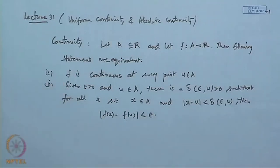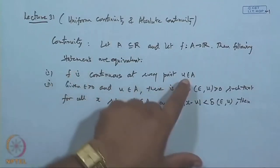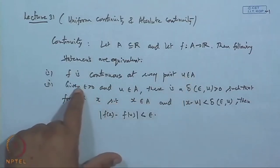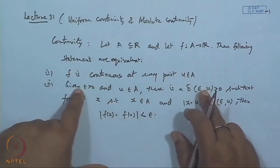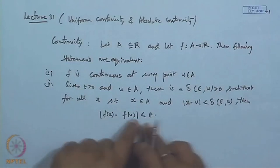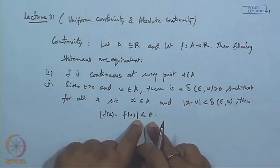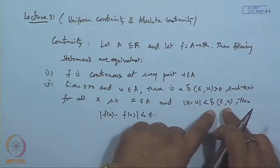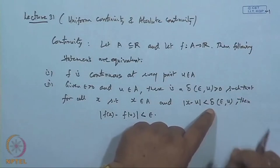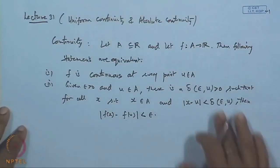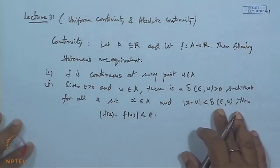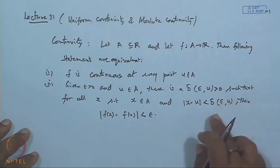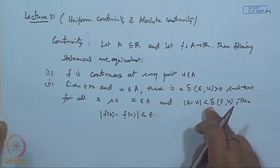So this we have discussed already: a function is continuous at a point u if, for a given epsilon, there exists a delta such that mod of f(x) minus f(u) is less than epsilon whenever mod of x minus u is less than delta. And here we have seen that this delta depends on the point — if I change the point, the delta will correspondingly change.